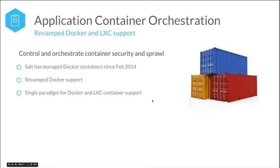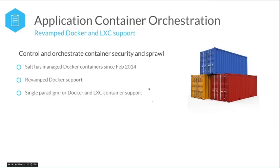Inside of our Docker support, we still have and have enhanced our network automation components, which means that when you deploy your Docker containers, SALT tracks all of their network connections and network ports. This makes it very easy to use that information to synchronize load balancers and network devices and whatever network redirection layer you may be using for routing communication between your containers. That system, originally introduced in 2014.7, has also been substantially enhanced.